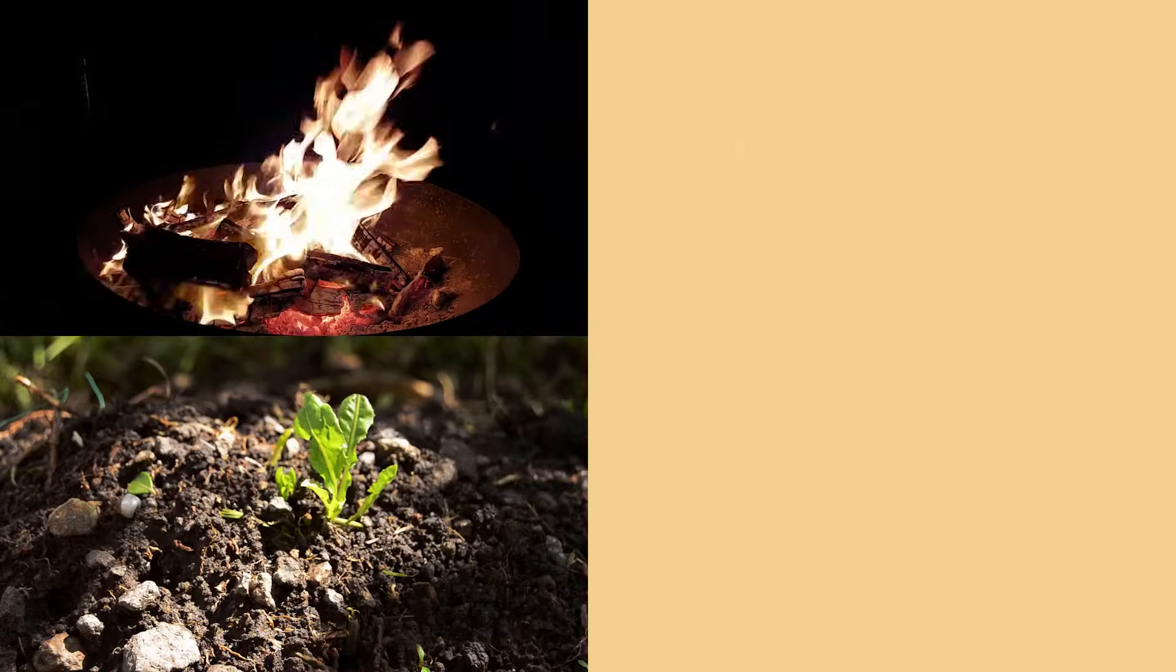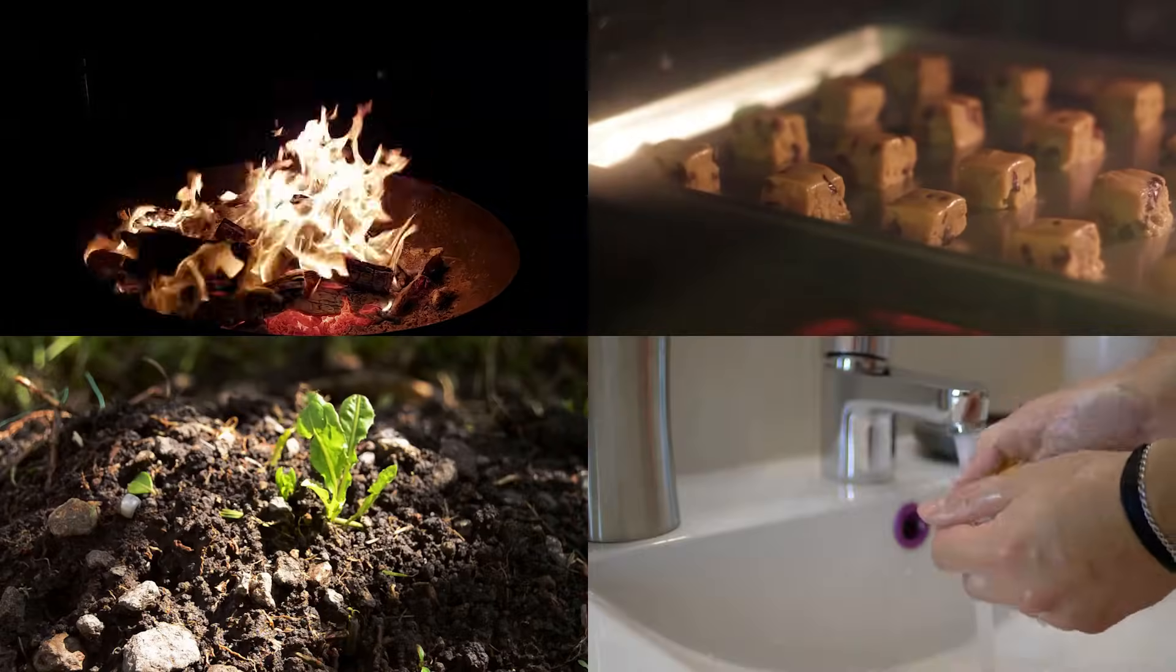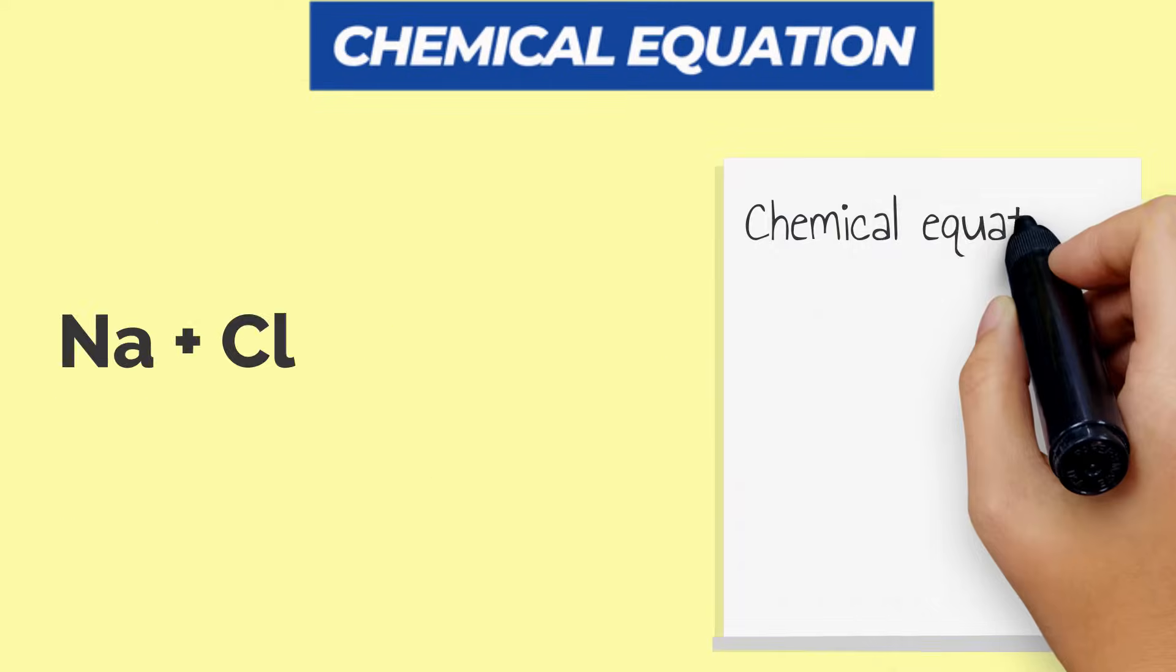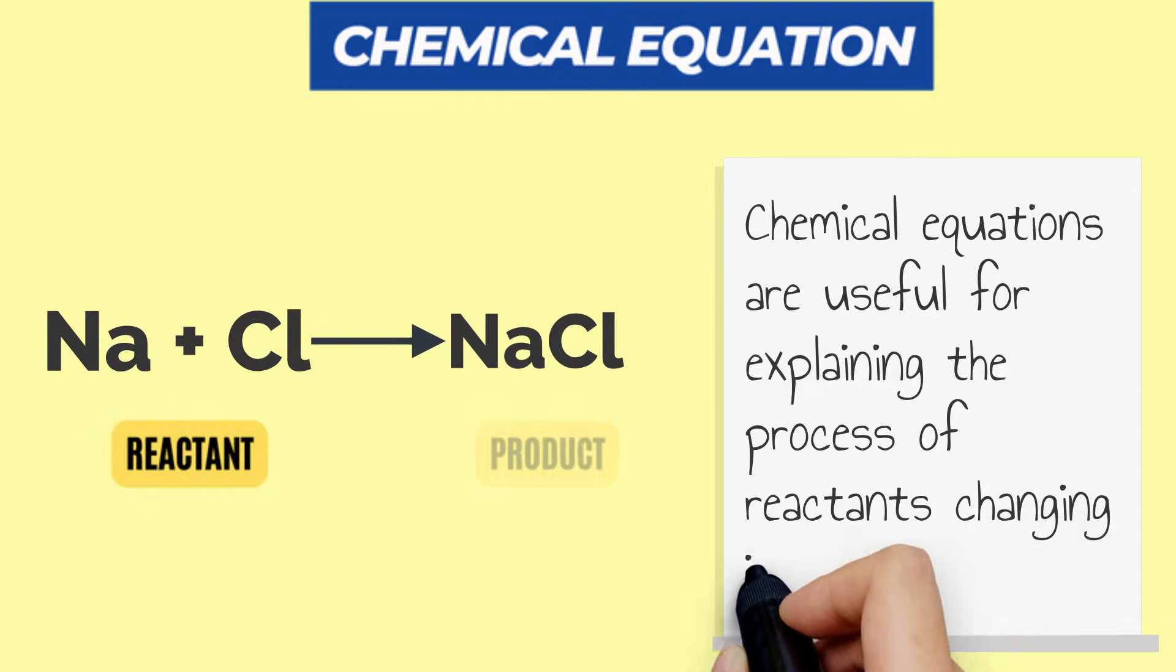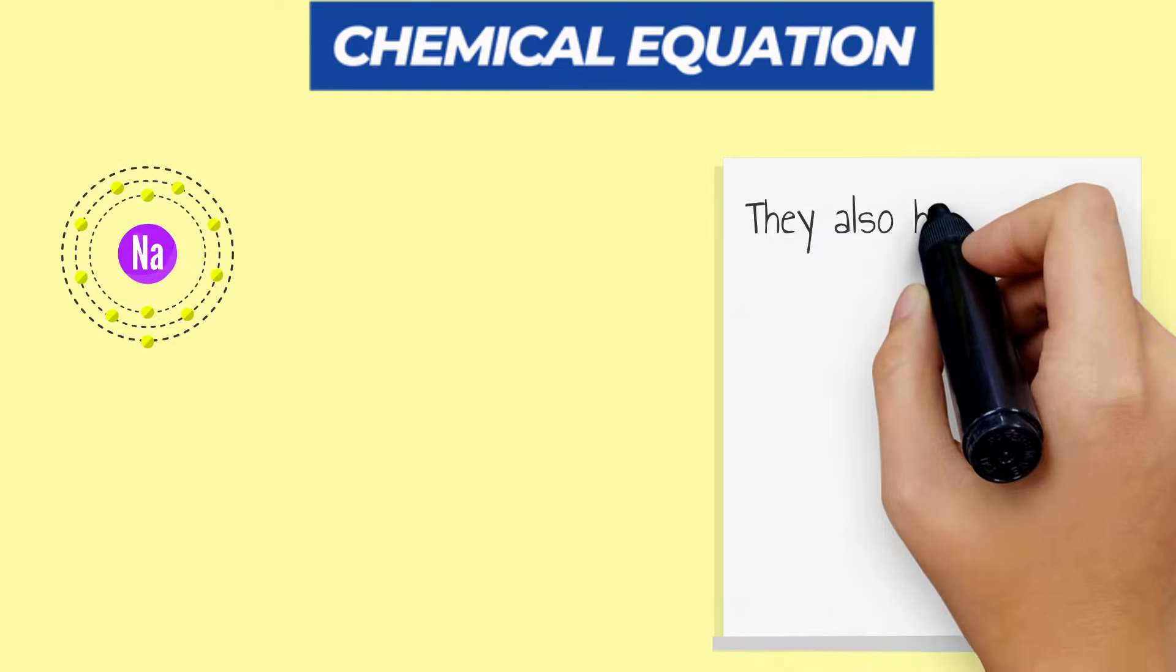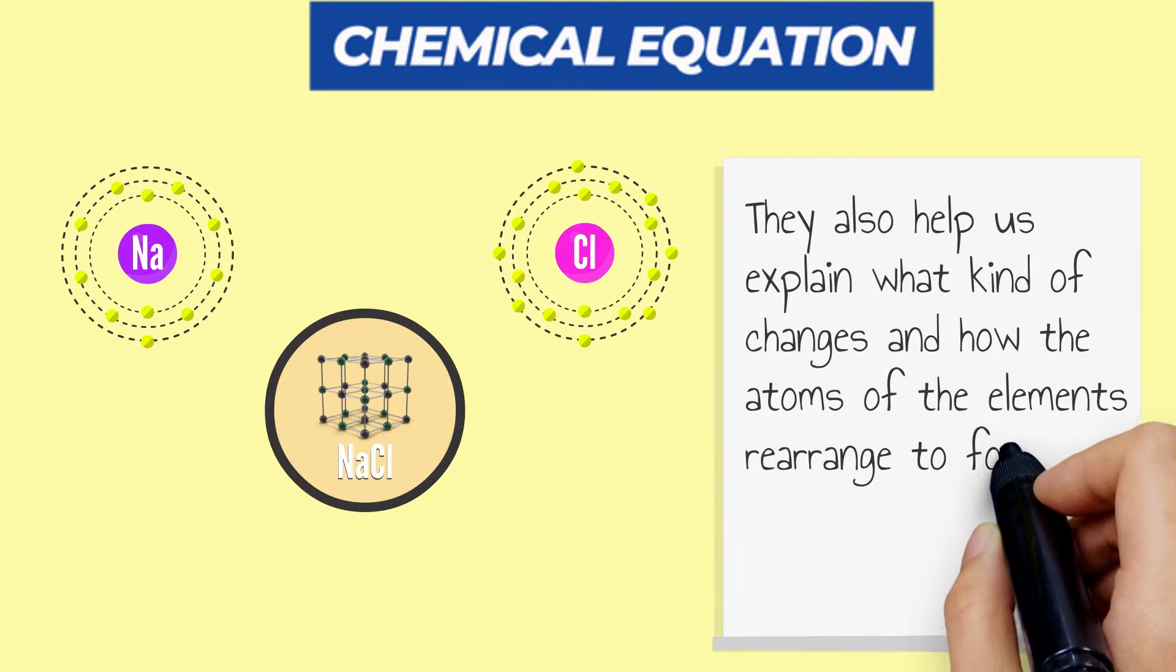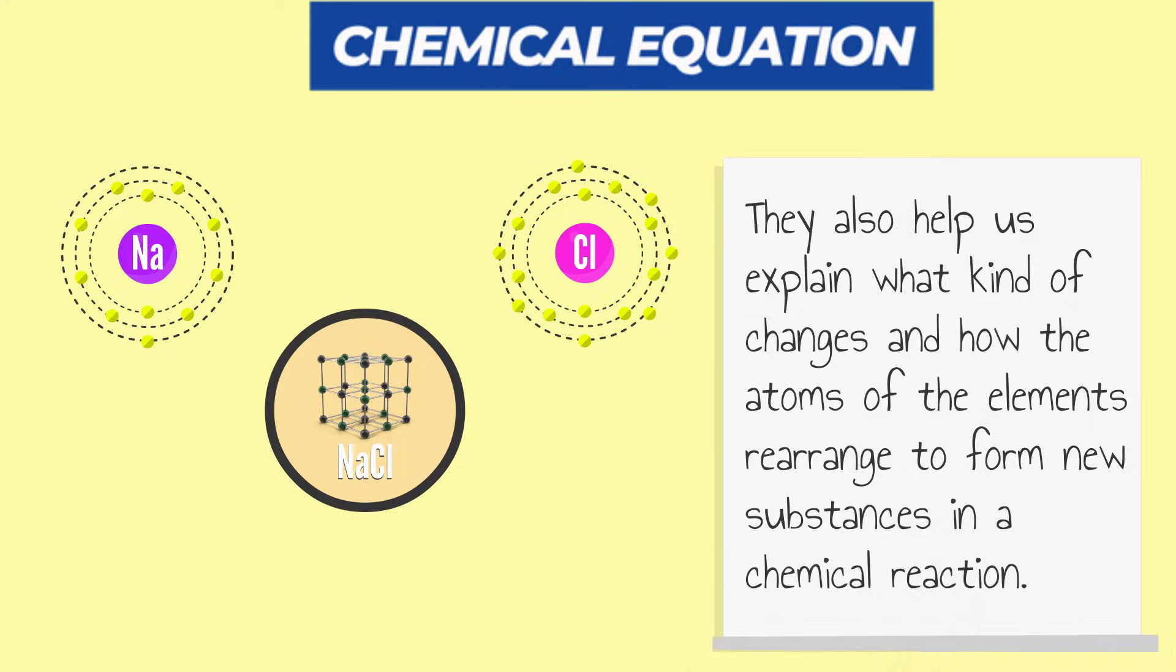Chemical reactions are always happening in the real world. But how can we describe them? We use chemical equations to show what's happening in a chemical reaction. Chemical equations are useful for explaining the process of reactants changing into products. They also help us explain what kind of changes and how the atoms of the elements rearrange to form new substances in a chemical reaction.